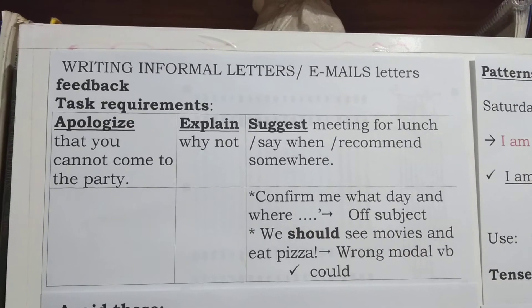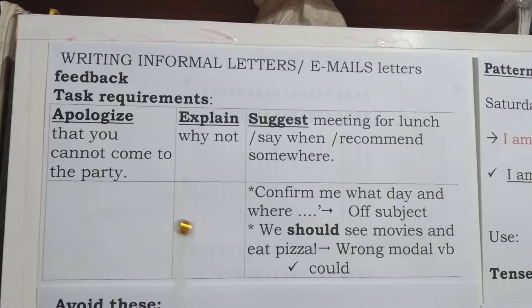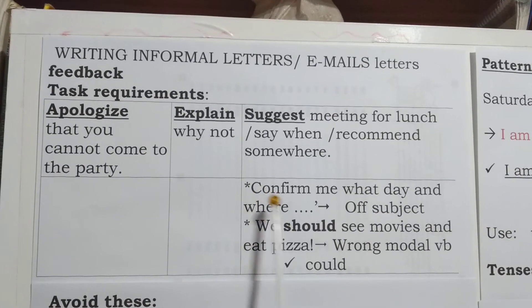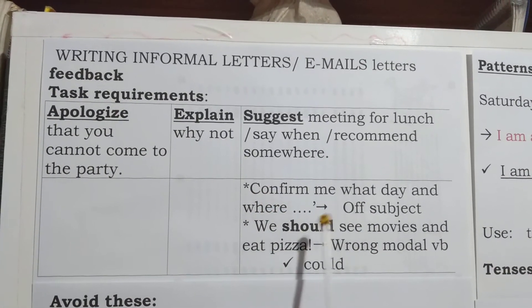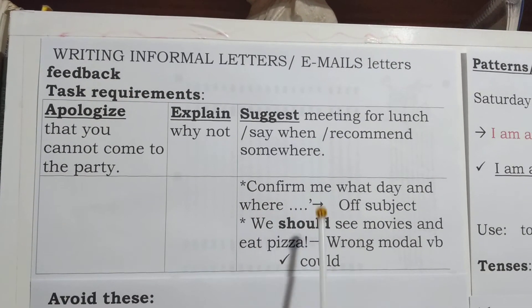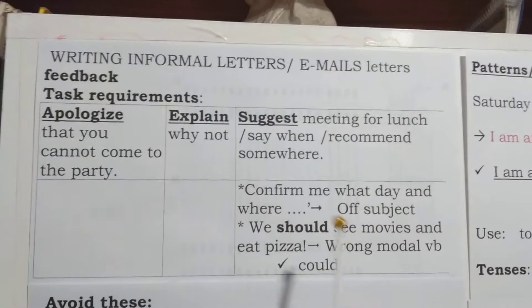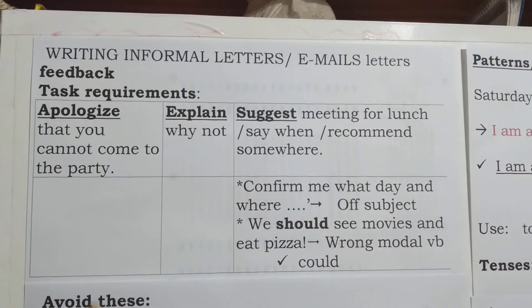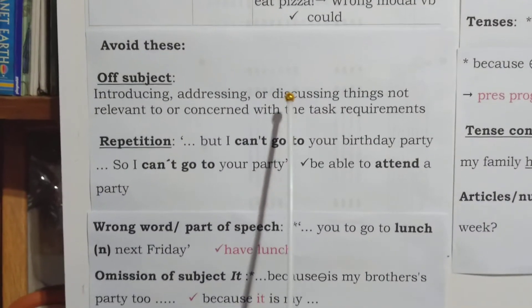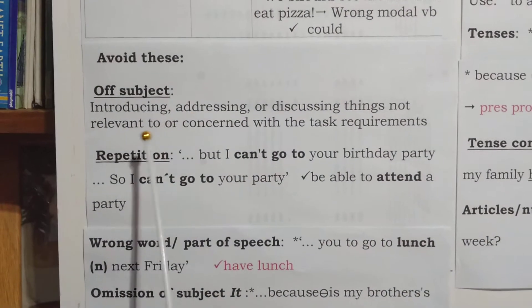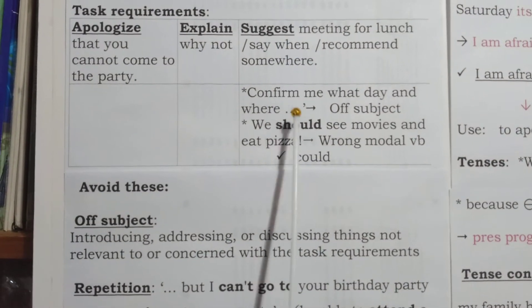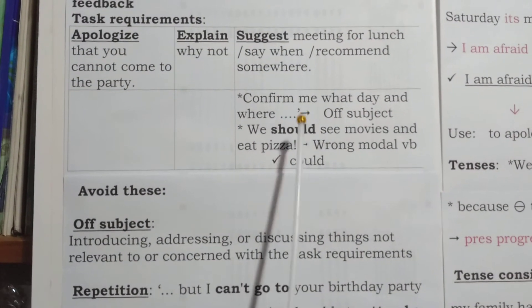What you have to avoid is, for example, this: here it says to suggest, and here somebody wrote the opposite thing — 'confirm me what day and where.' Please try to avoid going off subject. What it means is introducing, addressing, or discussing things not relevant or concerned with the task requirement, because this is not suggesting.